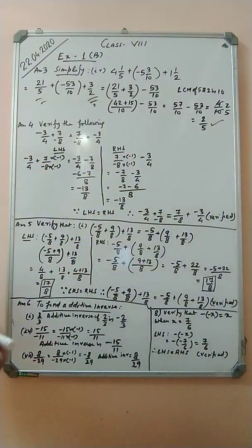Now Question Number 8: verify that minus (minus x) equals x, where x equals 7/6. Substituting: minus (minus 7/6). Minus into minus is plus, so we get 7/6. On the RHS, x is already 7/6. Since LHS equals RHS, therefore the statement is verified.